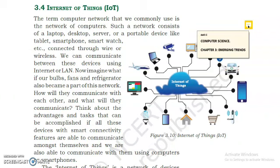First, let us understand the term computer network. A computer network is a network of computers — it consists of laptops, desktops, servers, or portable devices like tablets, smartphones, and smartwatches. When we keep these computers in a place and implement a network connection among them, it can be a LAN (Local Area Network), a WAN (Wide Area Network), or a MAN (Metropolitan Area Network). These devices can be connected using wired or wireless connections.